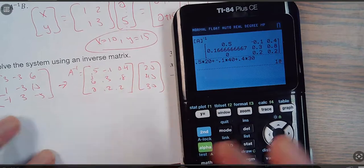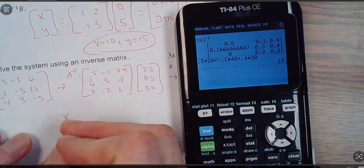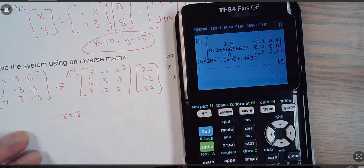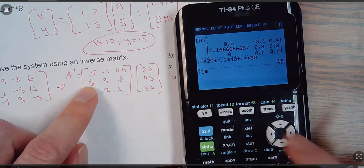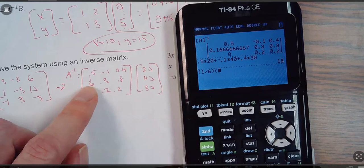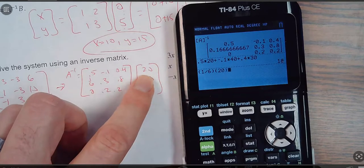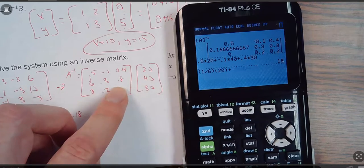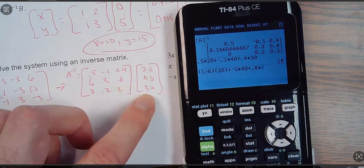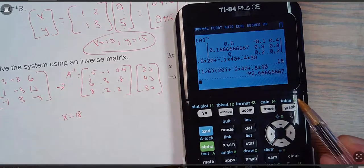Then I'll take 1 divided by 6 times 20, plus 0.3 times 40, plus 0.8 times 30. So that would be, I see what I did wrong here. I wanted 0.3, I did negative 3, so let me go fix this.